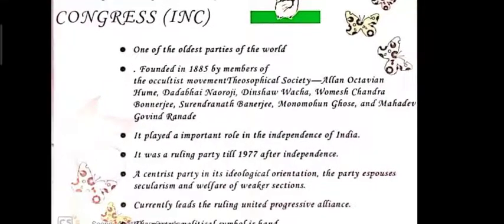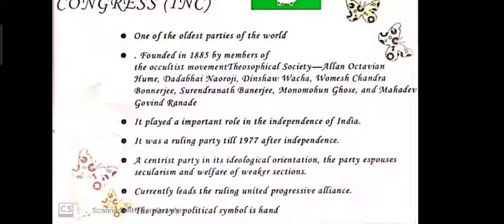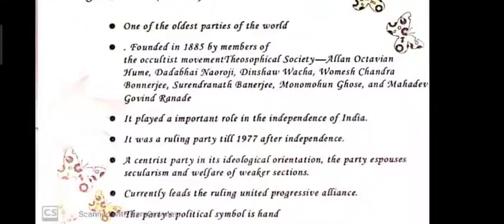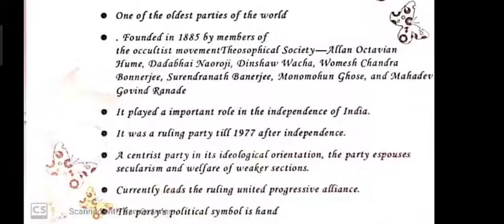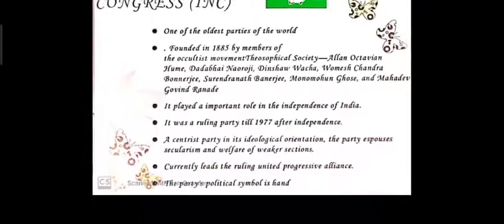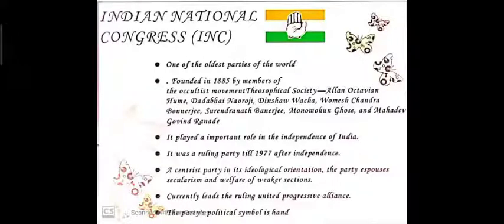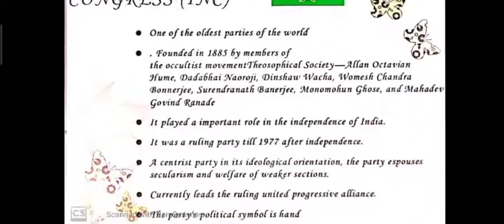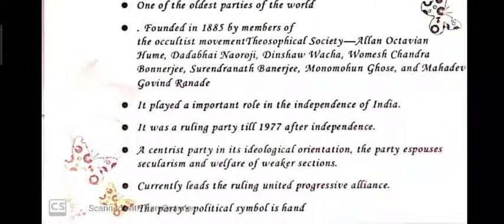It was founded in 1885 by members of the Theosophical Society — Alan Octavian Hume, also known as A.O. Hume, Dadabhai Naoroji, Dinsha Wacha, Surendranath Banerjee, and many more leaders. It played an important role in the independence of India because before 1947 only two parties were there: the Communist Party and the Indian National Congress.